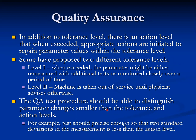Some have proposed two different tolerance levels: level one and level two. When level one is exceeded, the parameter might be remeasured with additional tests or monitored closely over a period of time. When level two is exceeded, the machine is taken out of service until the physicist advises otherwise. The QA test procedure should be able to distinguish parameter changes smaller than the tolerance and action level — for example, tests should be precise enough so that two standard deviations of the measurement is less than the action level.